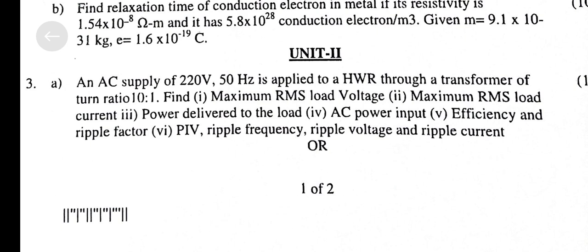Part B, Third Question. A. An AC supply of 220V 50Hz is applied to a Half Wave Rectifier through a transformer of turn ratio 10:1. Find: Maximum RMS Load Voltage, Maximum RMS Load Current, Power Delivered to the Load, AC Power Input, Efficiency and Ripple Factor. PIV, Ripple Frequency, Ripple Voltage and Ripple Current.